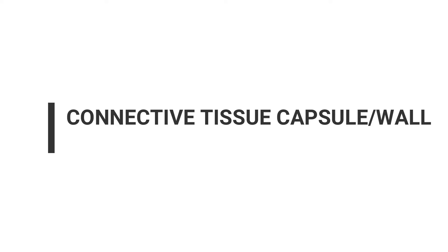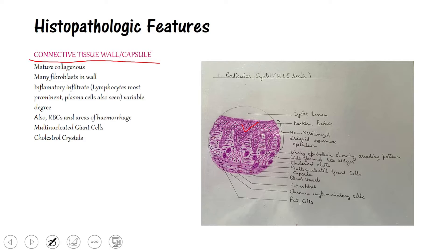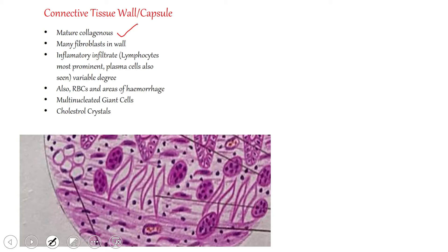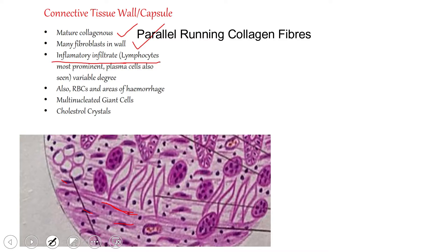Coming to the features of the connective tissue wall. The connective tissue wall is mature collagenous with collagen fibers and many fibroblasts present. There is also inflammatory infiltrate — lymphocytes are most prominent. Plasma cells are also seen to a variable degree. So there will be many lymphocytes and plasma cells in the connective tissue wall.